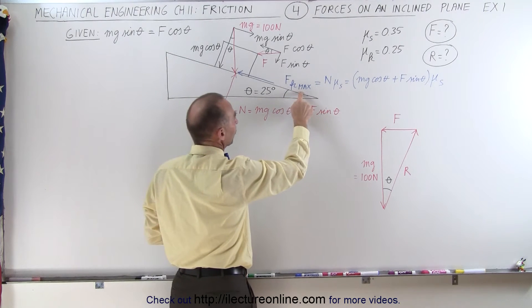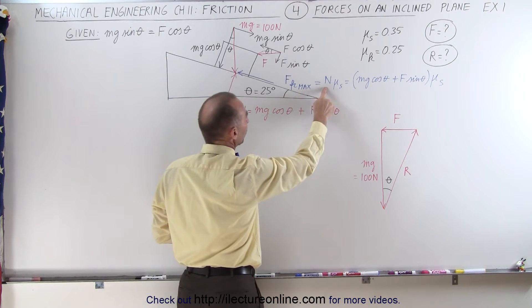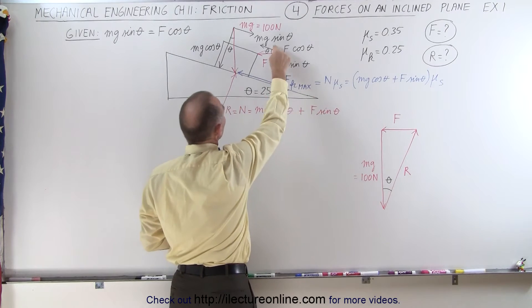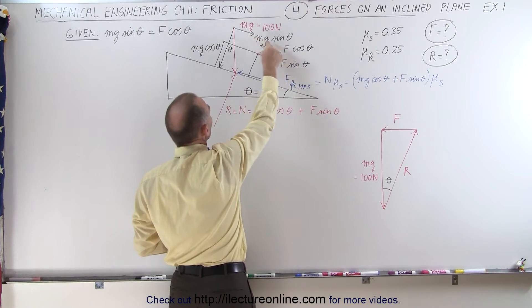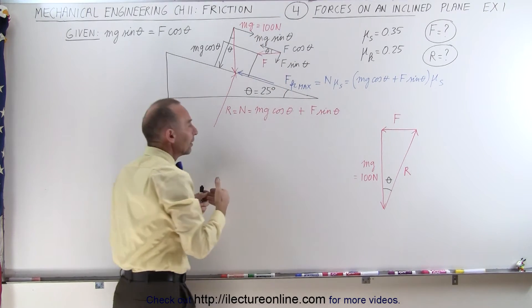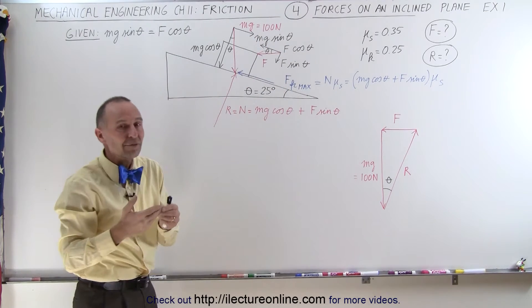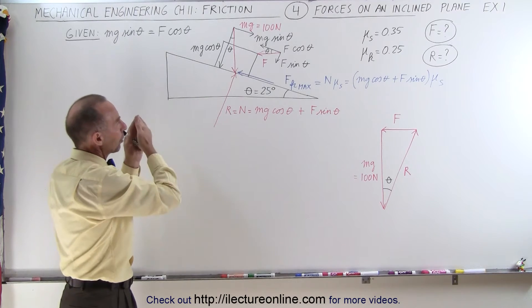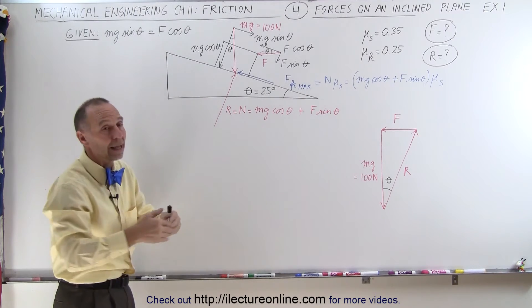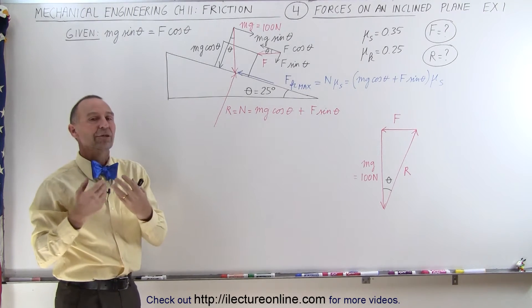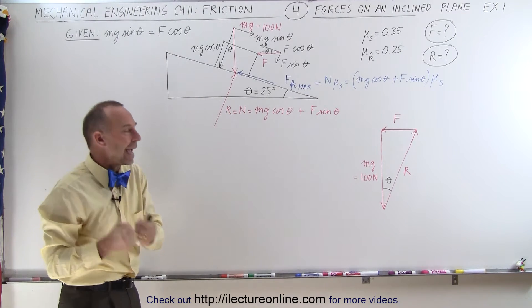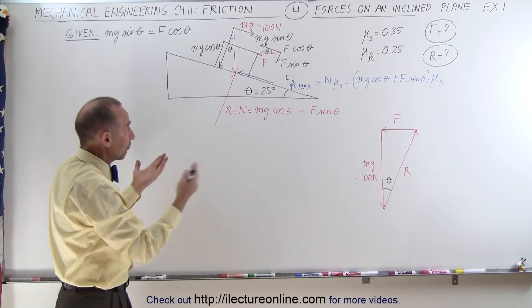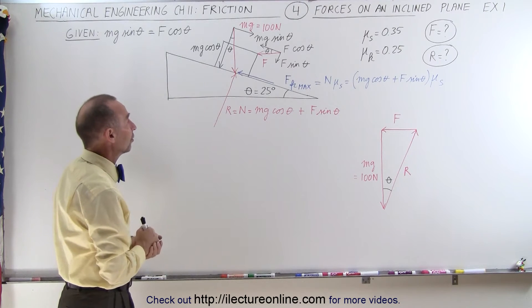The maximum friction force will be the normal force times the coefficient of static friction. But since these two components are equal, there is no net force trying to act on the block — trying to either push it up or down the incline — and it is therefore not being counteracted by friction. Therefore, the friction force is zero.